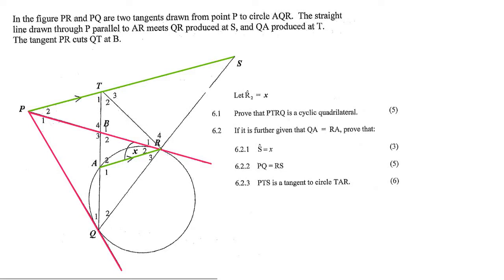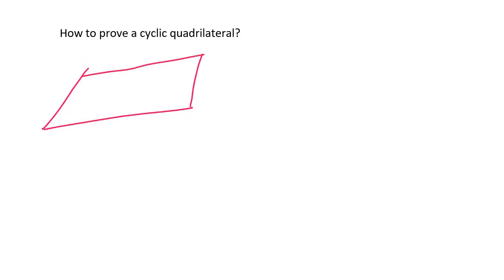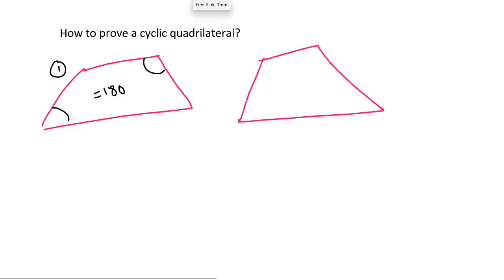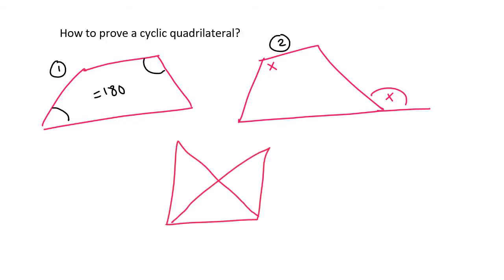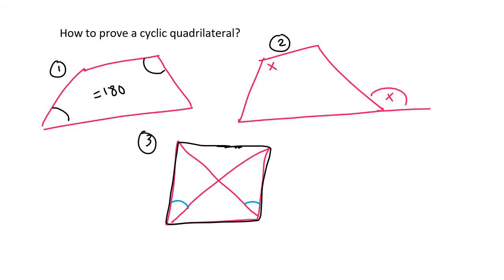The first question asks us to prove that PTRQ is a cyclic quadrilateral. Let's do a quick summary on how to prove that something is a cyclic quadrilateral — there are three main ways. The first way is to see if the opposite angles add up to 180 degrees. The second way is to look at the external angle, which should be the same as the opposite interior. The third way is if you have more of a bow-tie kind of shape, and if you can prove that those two angles are the same, then it is also a cyclic quadrilateral.